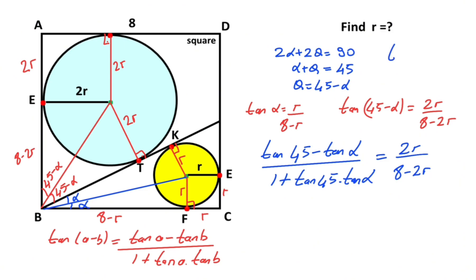You know that tangent of 45 degrees equals 1, right? So that's right here: 1. And tangent alpha equals r over 8 minus r.